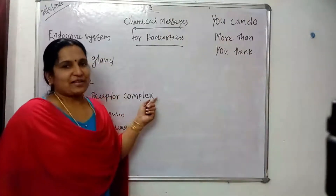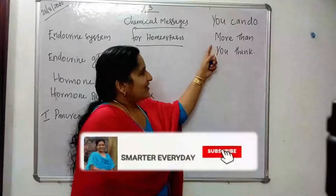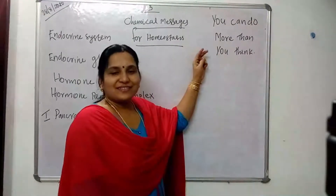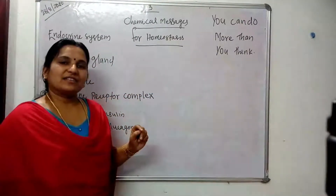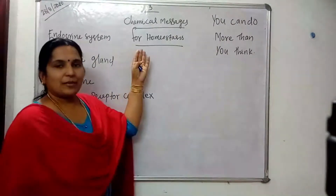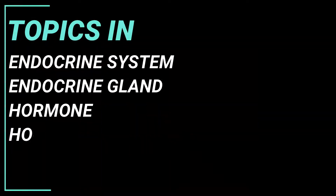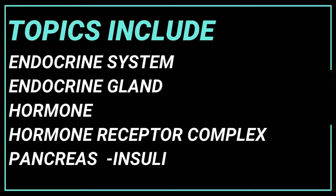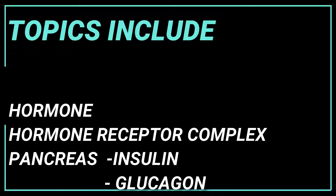Hi students, welcome back to this video. Today we will study a new lesson: Chemical Messages for Homeostasis. The topics to be covered in this session are the endocrine system, endocrine gland, hormone, hormone-receptor complex, and the endocrine gland named pancreas and its hormones.